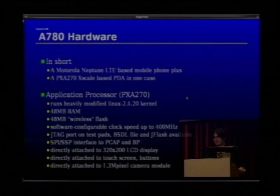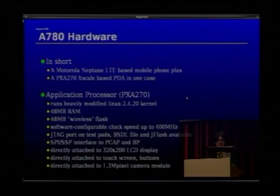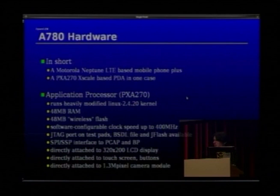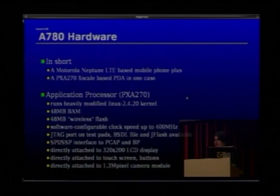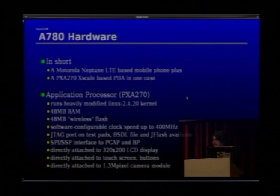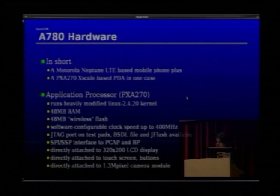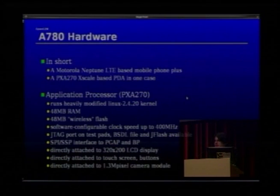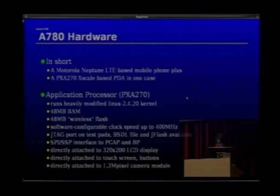There's a USB port on the PCB running between the front-end processor and the back-end processor. The front-end, called the application processor, is a PXA270 running a heavily modified 2.4.20 kernel with 64MB RAM and 64MB StrataFlash. The clock speed runs up to 400MHz, but the phone runs at only 200MHz for power consumption reasons — though the Game Boy emulator that now exists increases the CPU clock to improve performance. There's a documented JTAG port with a BSDL file available, and a JFLASH program for flashing. There's also an SPI/SSP interface to PCAP and BP chips.